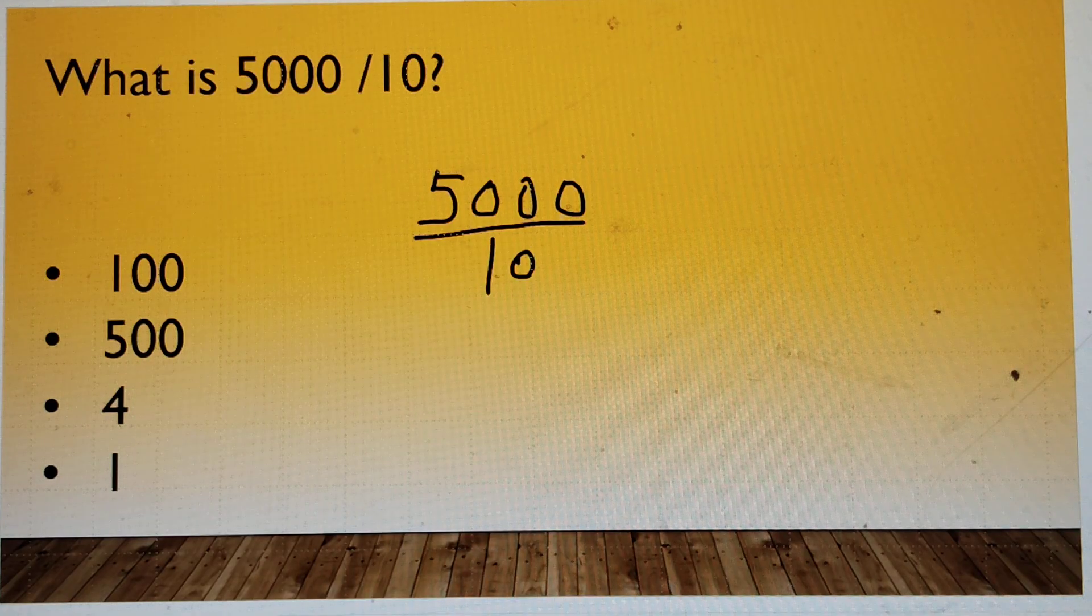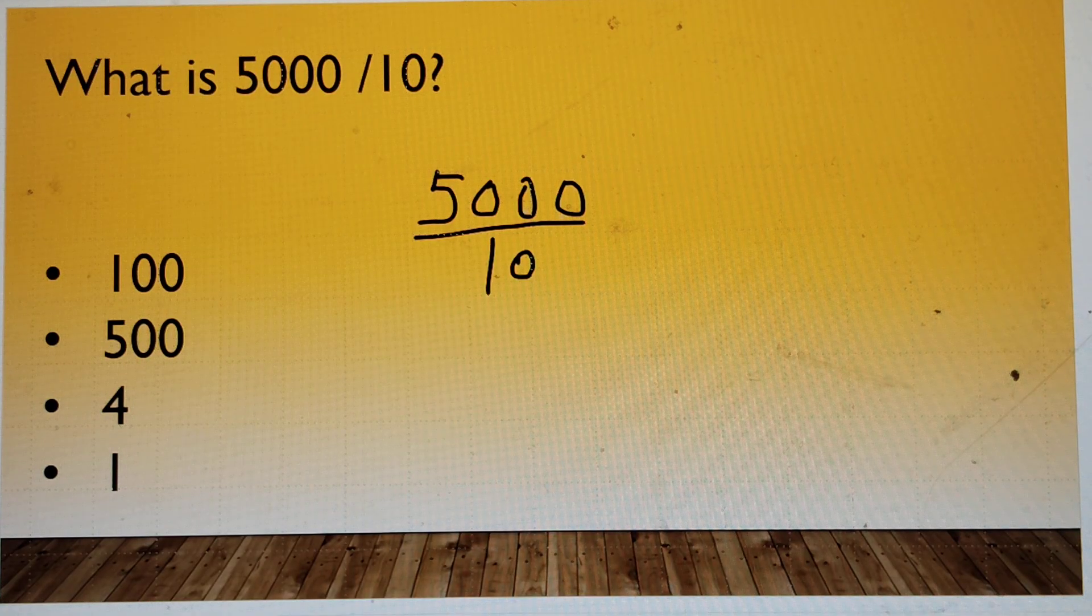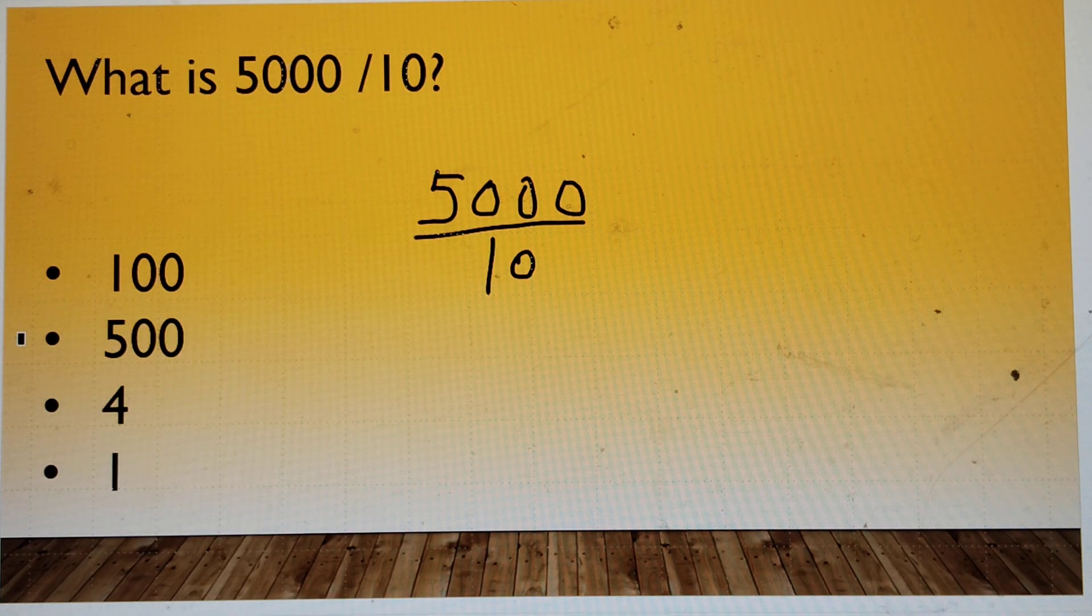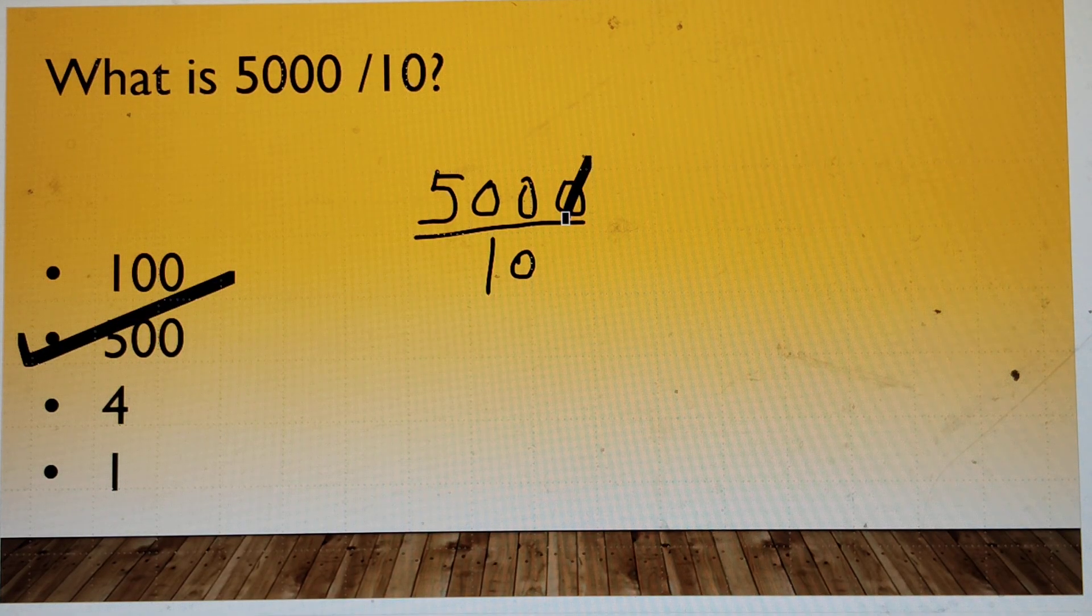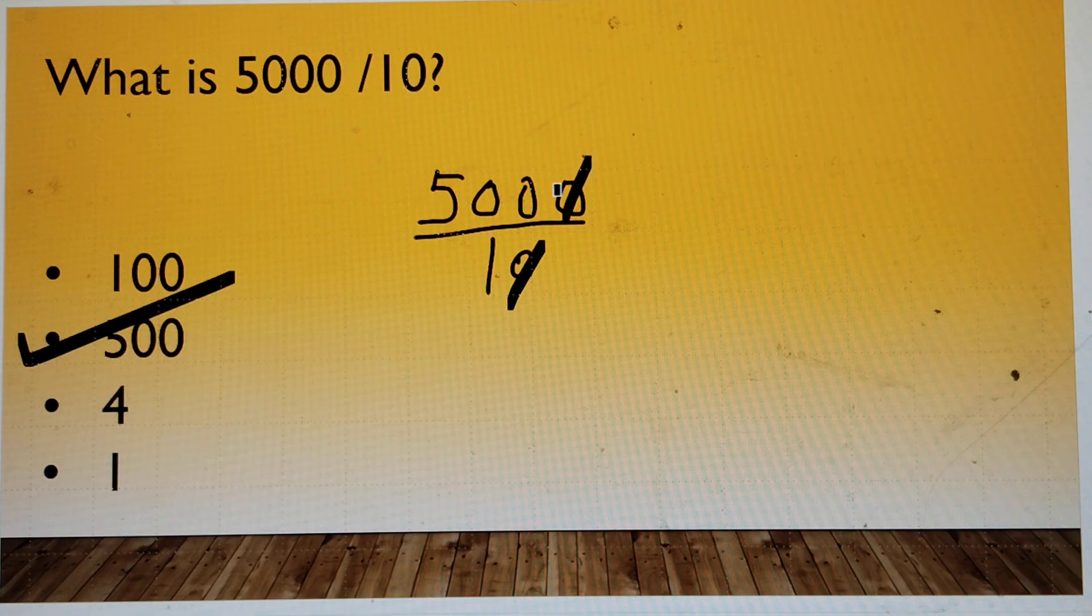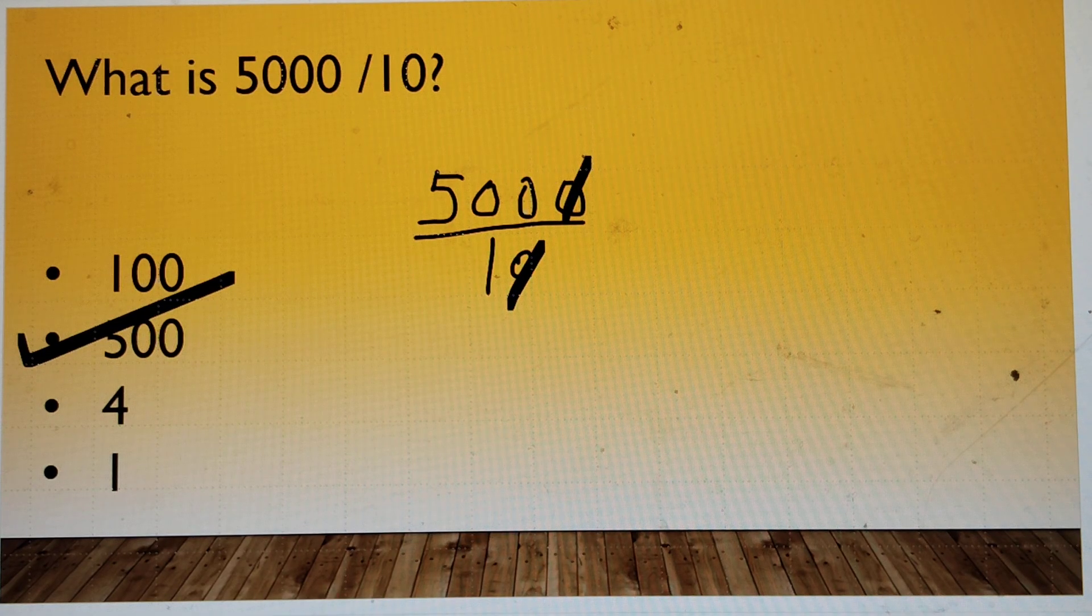Now, what is 5000 divided by 10? Is it 100, 500, 4 or 1? 500. Correct. So if we cut like this, it will be left with 500 only.